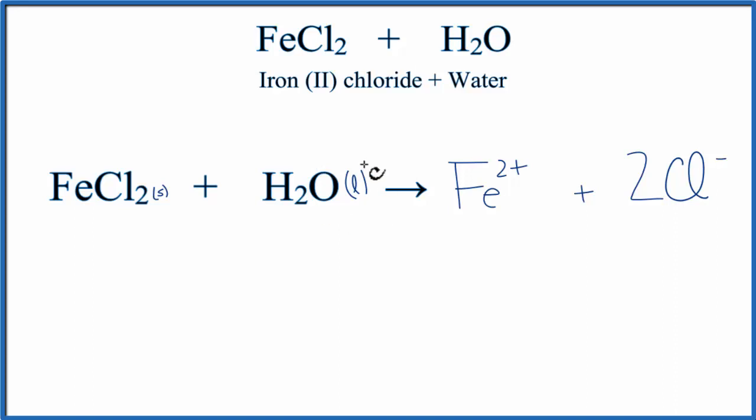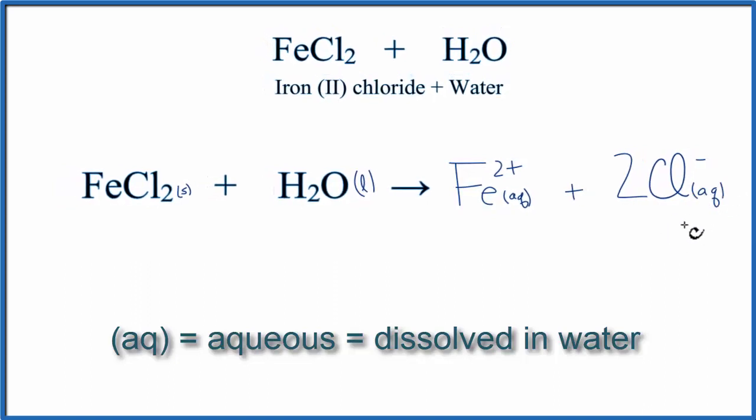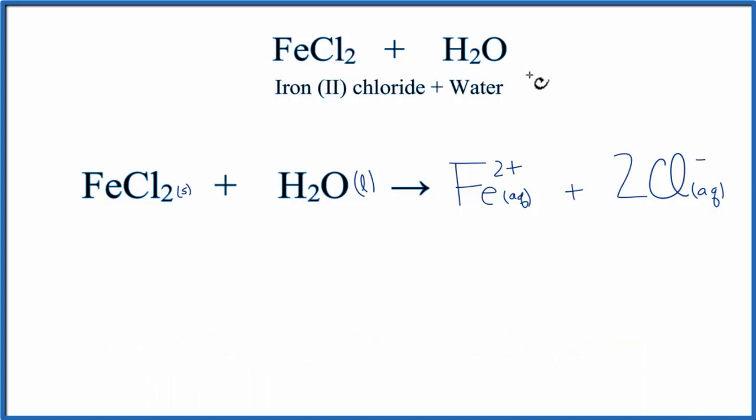Next, because we've dissolved this in water, we say that it's aqueous, AQ. That means dissolved in water. So we write AQ, and that shows that these are actually in water. Because of that, we don't need to write water on this side of the equation. And that makes this the equation for FeCl2 plus water, iron(II) chloride plus H2O.